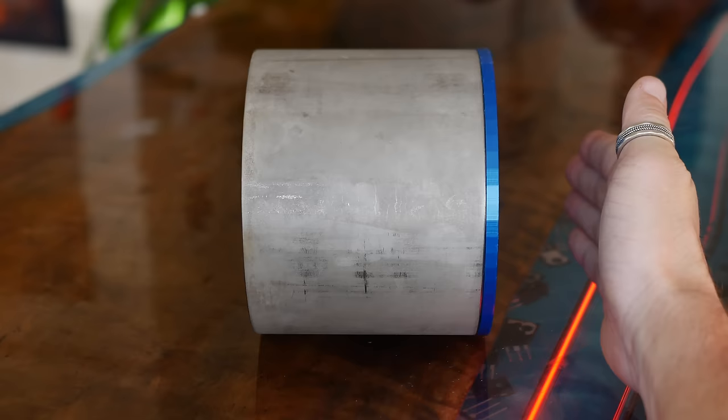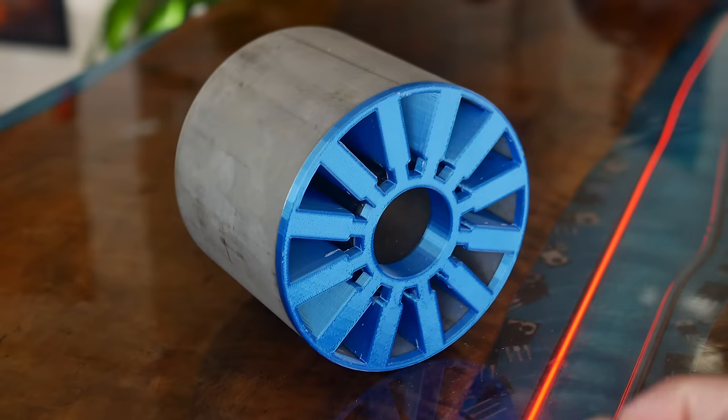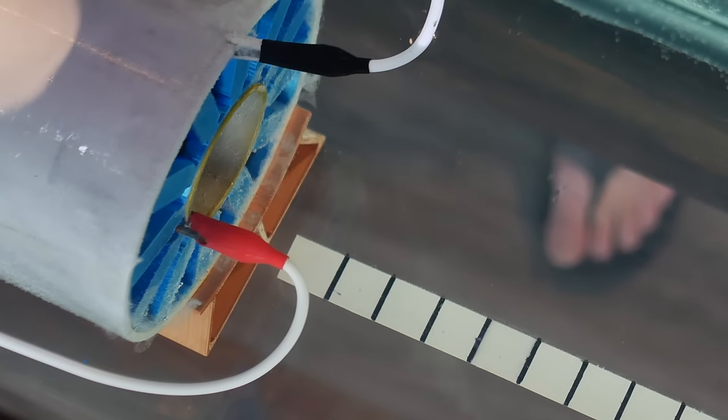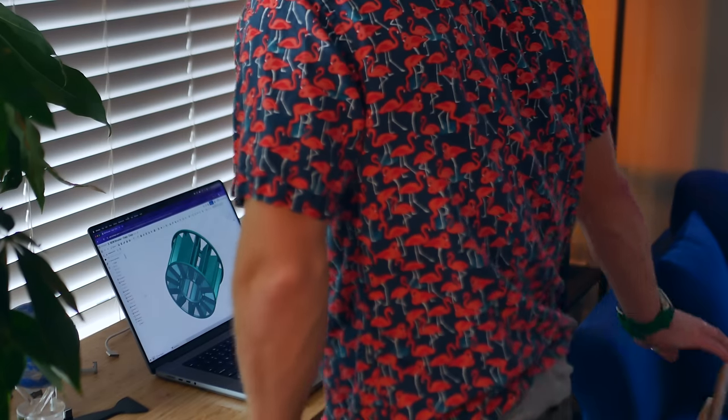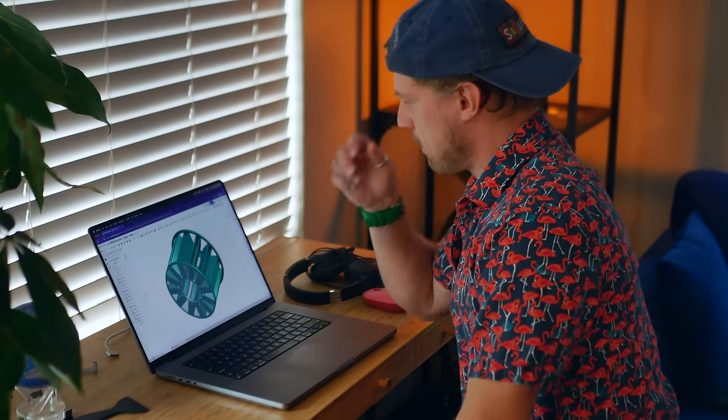So after some additional thinking, I realized this design already had room for improvement. Namely, hydrodynamics. The front and back are just flat. This slows down the intake of water and produces eddy currents behind the supports, visible right here, which increases drag. So I sat down for an intense redesign of this thruster using Onshape.